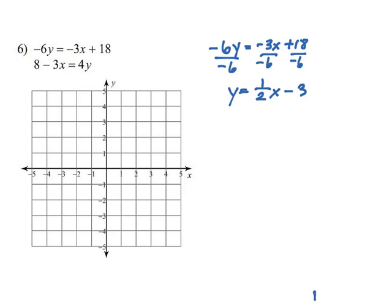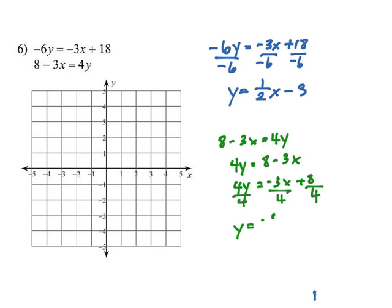Okay, and then for the second equation, we're going to have 8 minus 3x equals 4y. I'm going to go ahead and rewrite that as 4y equals 8 minus 3x, because it's the same thing. I'm going to further rewrite that as negative 3x plus 8, because I'm trying to make it into the slope-intercept form. So here I'm going to divide everything by 4. So we have y equals negative 3 fourths x plus 2.